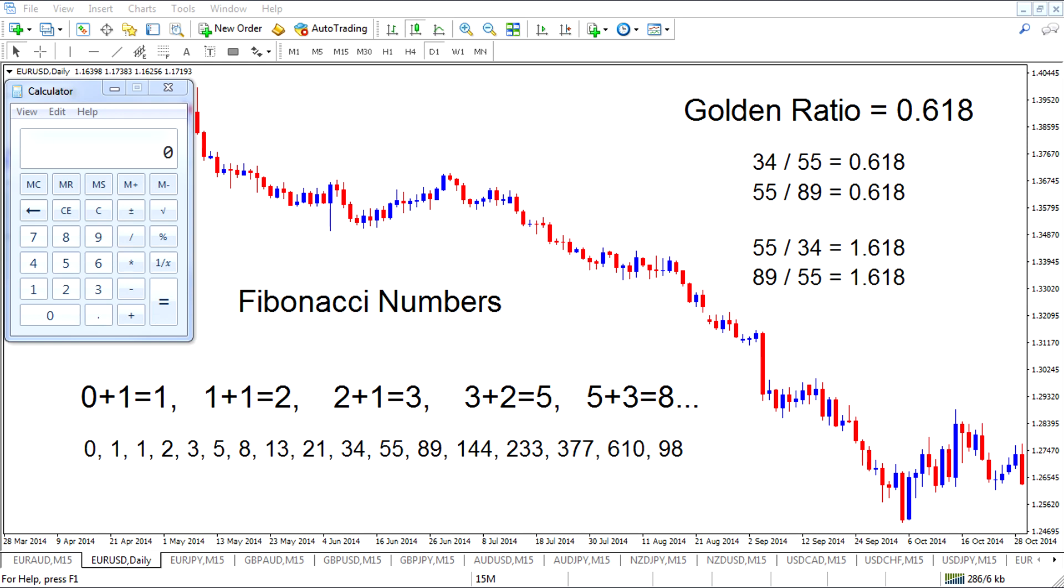Now why is that the case? Well, Fibonacci numbers seem to resonate with the market the best. The most effective settings for an awful lot of indicators seem to be the Fibonacci numbers. Now let me explain a little bit what a Fibonacci number is.